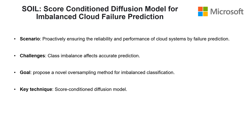To address these limitations, we propose a novel sampling method for imbalanced classification called SAWYER. SAWYER is a Score-Conditional Diffusion Model to generate high-quality samples for the minority class, more carefully reflecting their workload value patterns.